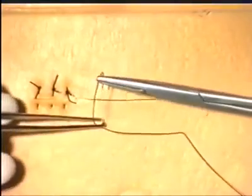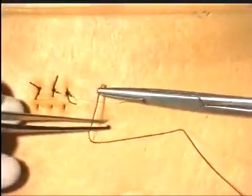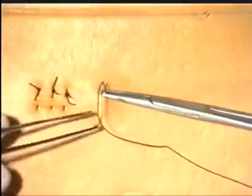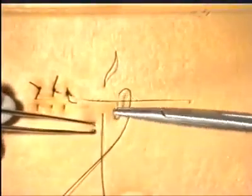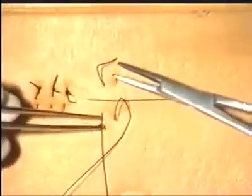We will now demonstrate the horizontal mattress suture. The initial suture is as before. Again, reverse the needle in the needle holder, but on this occasion move slightly horizontally and go back to the other side of the incision in a similar manner.